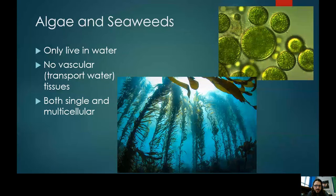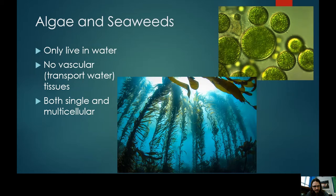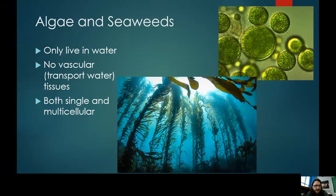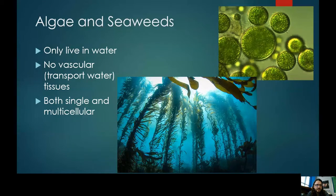Algae and seaweeds were the first plants to appear on Earth. They can only live in the water because they lack vascular tissue — the system plants use to transport water. If you look at a tree or shrub, it has stems designed to funnel water up and sugars down through tubes called xylem and phloem. Xylem moves water; phloem moves sugar and other nutrients.